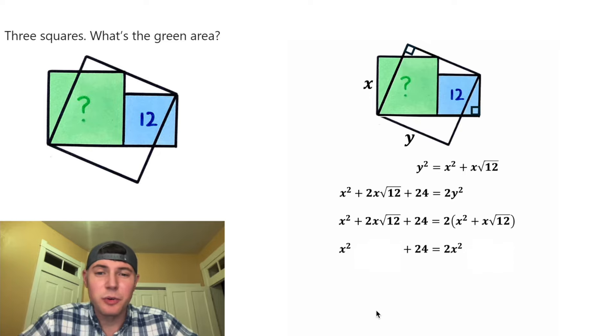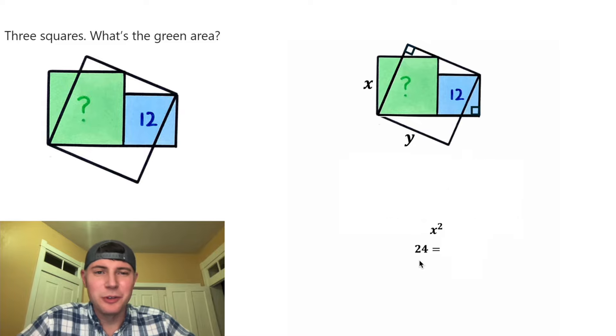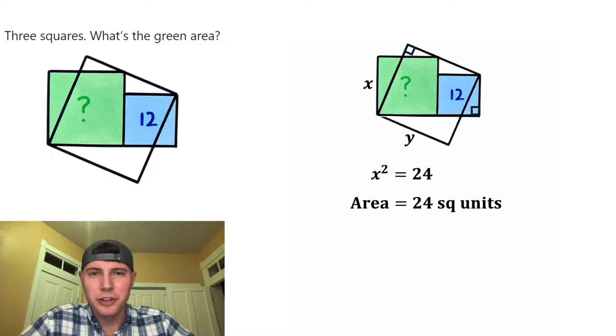Next, I want to move this X squared to the other side, so let's subtract X squared from both sides. And two X squared minus X squared is equal to one X squared. Now we know that X squared is equal to 24, and X squared is equal to the area of our green square. So the answer to our question is 24 square units.